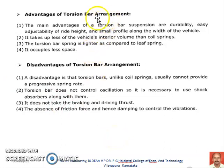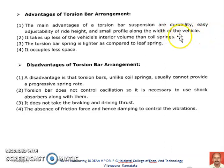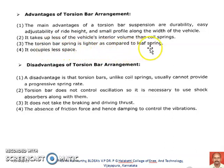The main advantages of the torsion bar arrangement are durability and easy adjustability of the ride height, and a very small profile along the width of the vehicle — meaning it takes minimum space in the vehicle's width. It also takes up less vehicle interior volume than coil springs. The torsion bar spring is lighter compared to the leaf spring and also occupies less space. These are the basic advantages of the torsion bar arrangement.